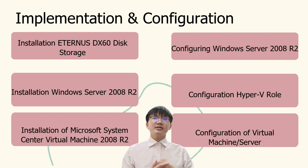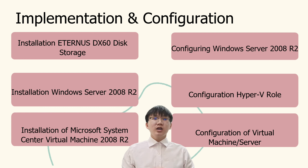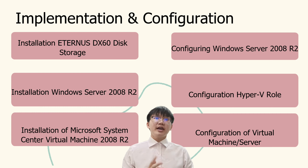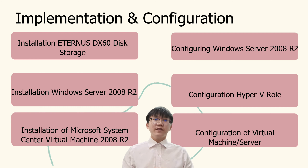The fifth process is configuration of Hyper-V. Hyper-V is used for creating and running a software version of a computer, called a Virtual Machine, also known as a Virtual Server. We need to make sure the installation of Microsoft Server 2008 and basic configuration is done before starting to install and configure Hyper-V. In this process, we have 8 steps that we need to go through.